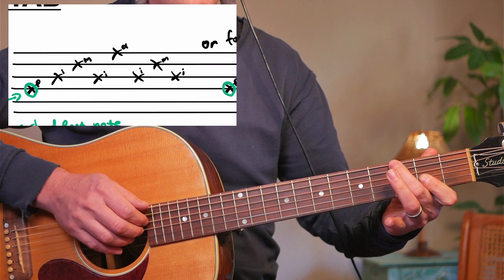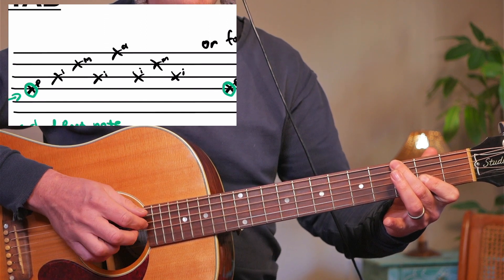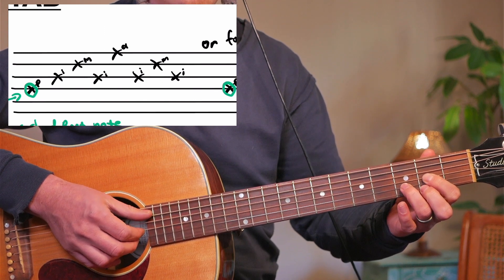And then the G, move all the fingers up and the bass at the top. And then for the D over A, you do D, but with the bass here.